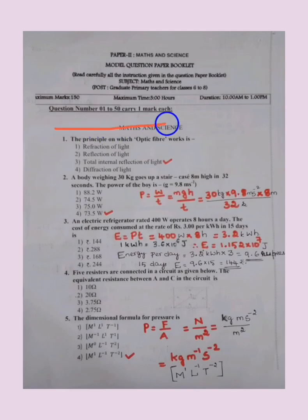Question numbers from 1 to 50 carry one mark each question. This is multiple choice. Four answers will be given. We have to choose the right answer among this. Be careful while writing the answer with proper question numbers. Question main number and sub number also we have to mention. First question: The principle on which optic fiber works is based on total internal reflection of light.